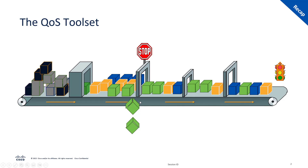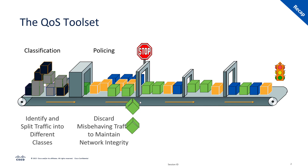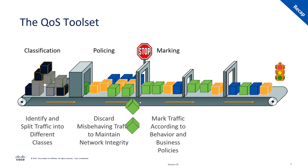A quick recap of the various components that constitute the QoS toolset. The first thing we need to do is identify the traffic coming into the system — this is called classification. If we want to limit the amount of traffic traversing the system we have policing, where we define a particular rate and drop excess traffic that exceeds that rate. Next we have marking, where we apply a label onto the traffic that can be referenced later within the same switch or at a downstream switch.